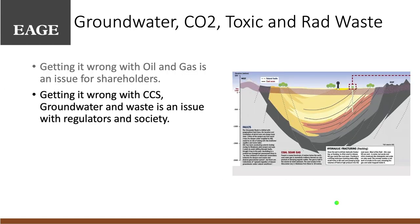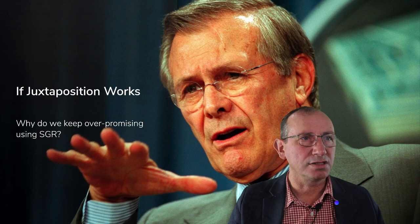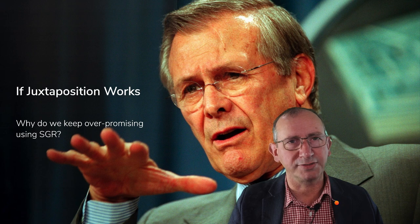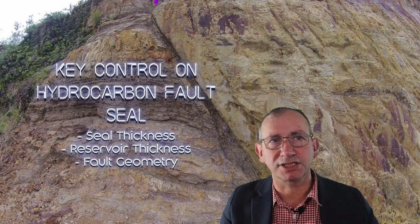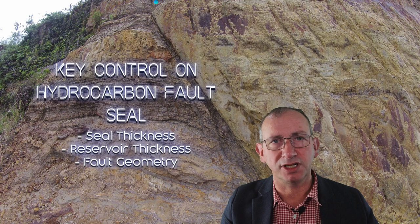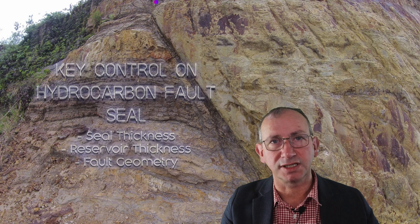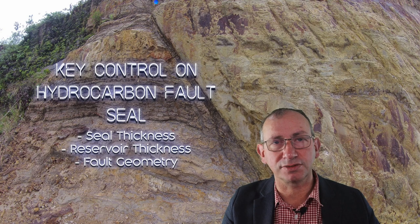Getting it wrong with carbon capture and storage and groundwater is going to cause problems with regulators. Most importantly, if we can't ensure we have future trustworthy data, we're going to have issues with landholders and the general public. Fundamentally, we know juxtaposition works — so why do we keep over-promising with SGR? The key controls in hydrocarbon fault seal are seal thickness, reservoir thickness, and fault geometry. Let's get on with doing the basic things we know we can do. The known unknowns are that we can't collect fault core easily, and permeability measurements and fault rock thicknesses in outcrop are potentially suspect — it's a case of doing good work and not getting too complicated.